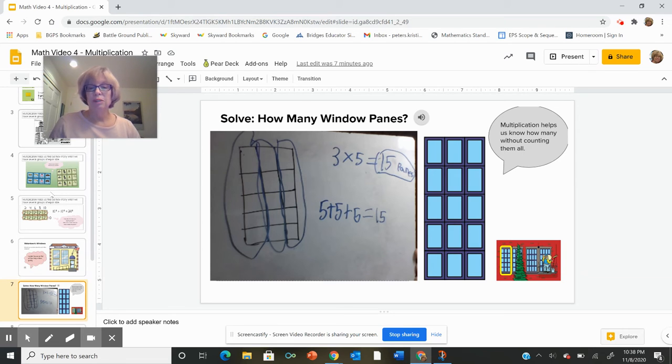So we've done some work and I borrowed work from Amelia. I hope she doesn't mind. So when we would say, how many windows are in this pane and reminding them, we don't want to count them all. What Amelia did is found equal groups going vertically, found that there were three groups of five and added five and five and five is 15.